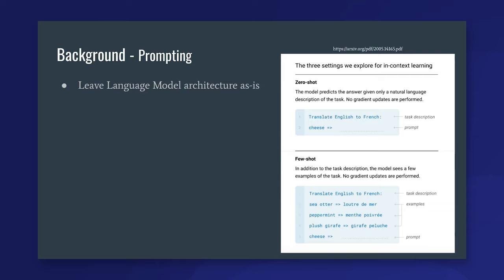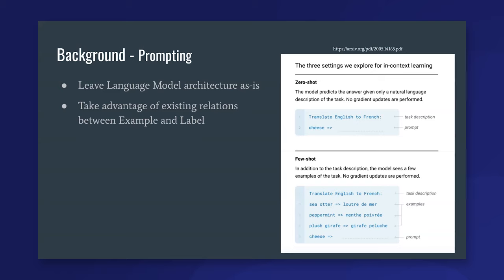In the zero-shot setting, the input to the model is basically: 'Translate English to French,' then 'cheese' with an arrow. In the few-shot case, we still frame the task — 'translate English to French' — and then give a few examples of English-to-French translations before asking the model to complete the next prompt. One of the really nice parts about this is that it allows us to take advantage of existing relations between our examples and any label space we might care about when running classification tasks.